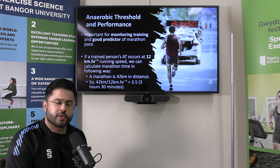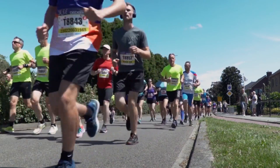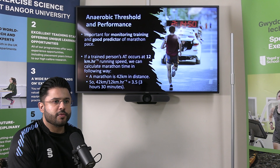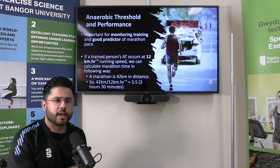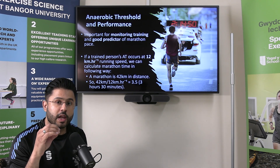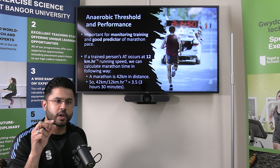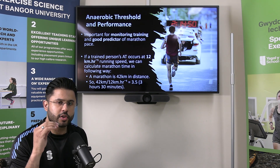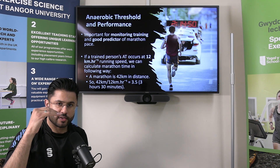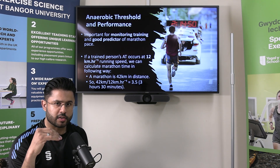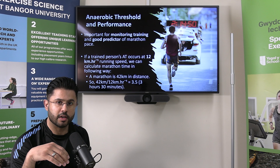One of the good things about the anaerobic threshold is we can use it to predict performance and monitor training. It's a good predictor of marathon pace. For example, if an individual's anaerobic threshold occurs at around 12 kilometres per hour, we can calculate their running speed on marathon day. Since a marathon is about 42 kilometres, dividing gives a run time of 3 hours 30 minutes — running just below the anaerobic threshold means the runner is very unlikely to accumulate fatigue from anaerobic energy sources.